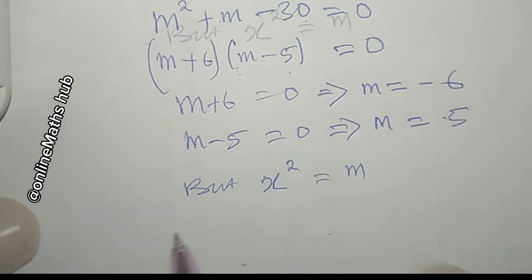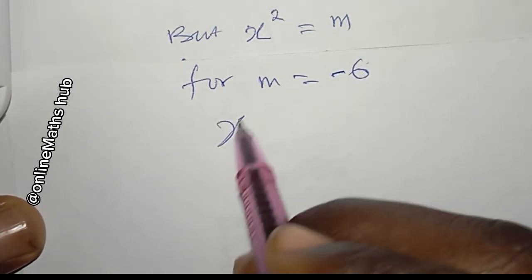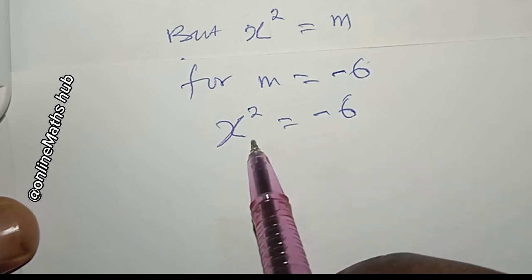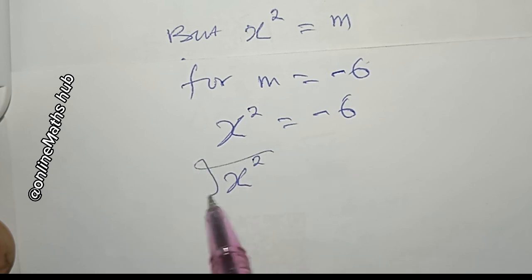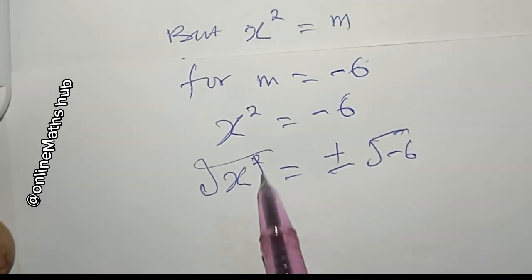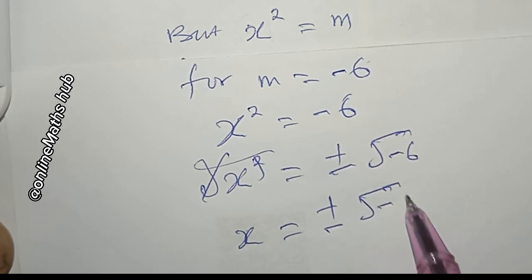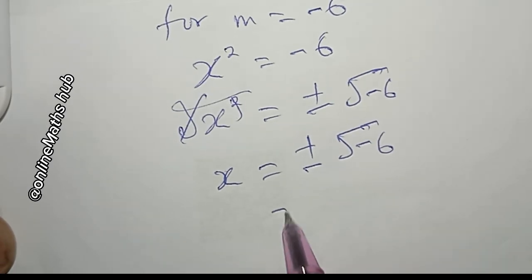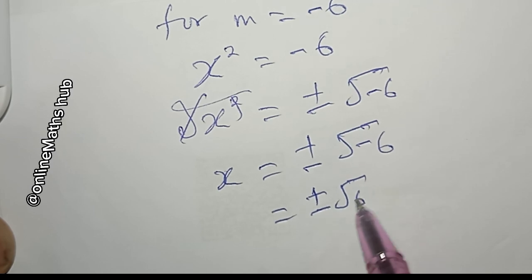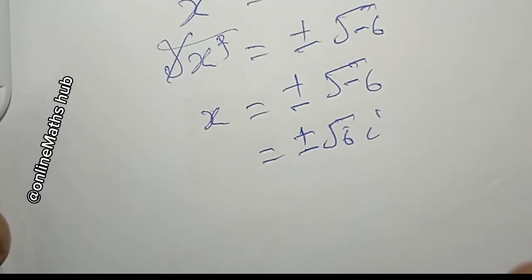Don't forget we set x squared equal to m. For m equal to negative 6, x squared equals negative 6. Taking the square root of both sides, x equals plus or minus the square root of negative 6, which gives plus or minus i√6.